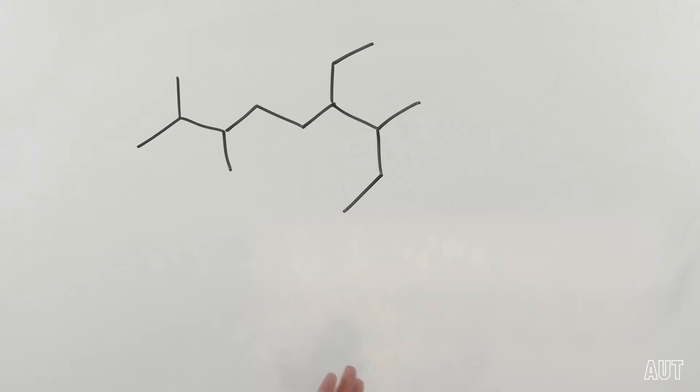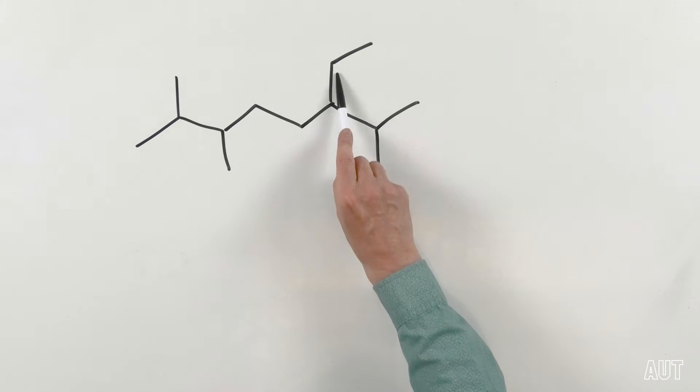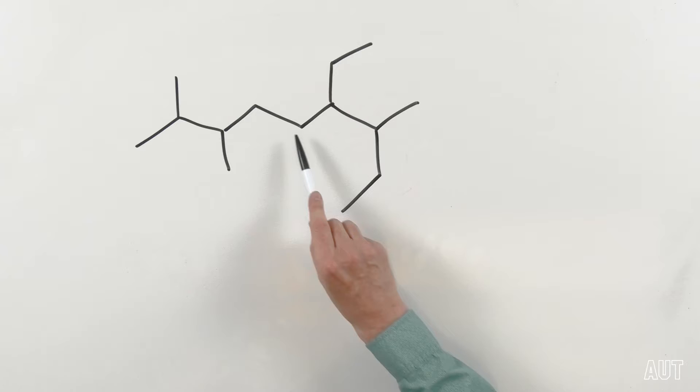So how would we go about naming this puppy here? Remember, very importantly, you look for the longest carbon chain first, that's always the first thing you do. You've got a variety of possibilities here by the look of it. What have we got? 1, 2, 3, 4, 5, 6, 7, 8 that way. We've got 1, 2, 3, 4, 5, 6, 7, 8 that way. We've got 1, 2, 3, 4, 5, 6, 7, 8, 9 that way.